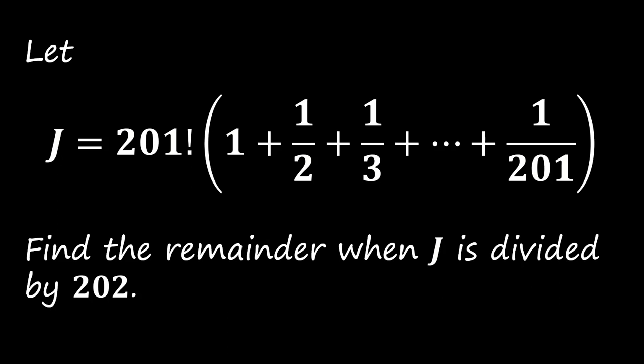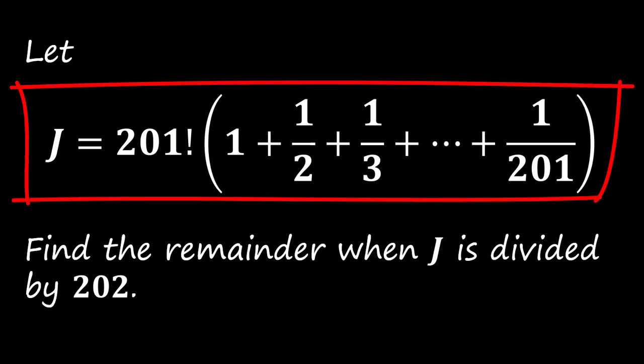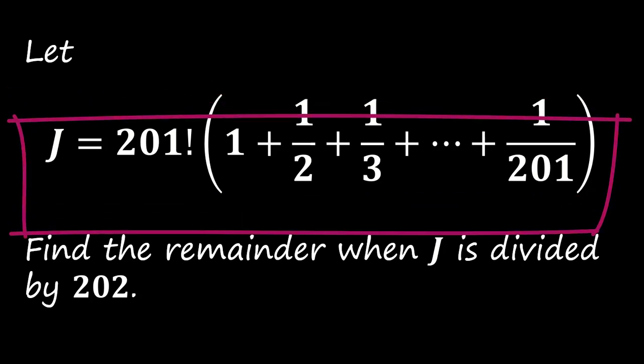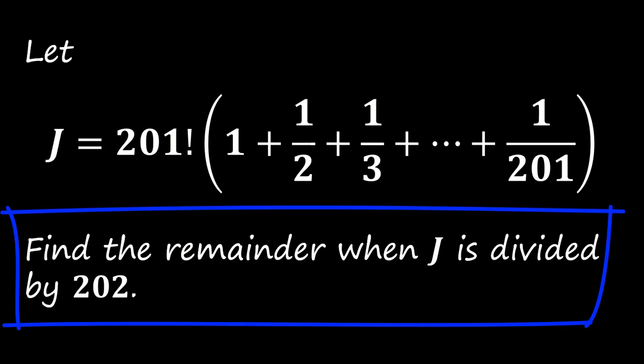Here is the challenge. Let's define J as the integer represented by 201 factorial times 1 plus 1 over 2 plus 1 over 3 all the way to 1 over 201. Your mission is to find the remainder when J is divided by 202.